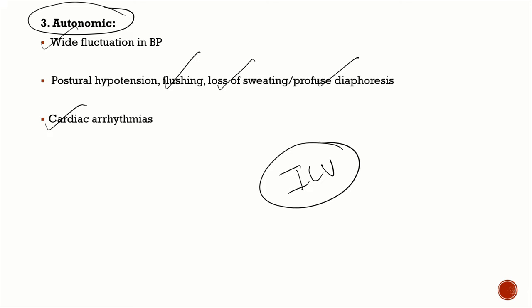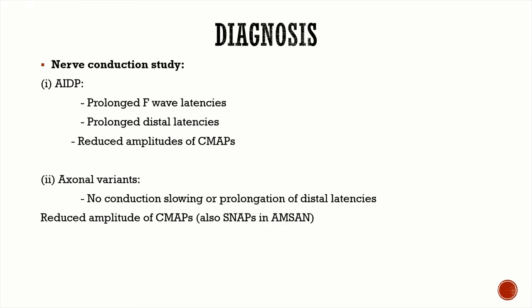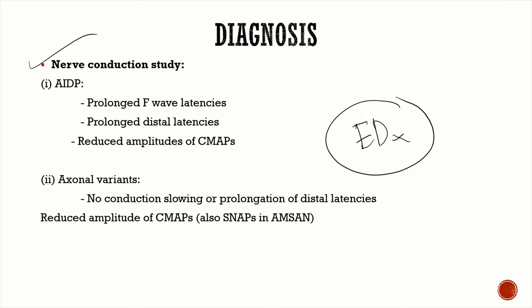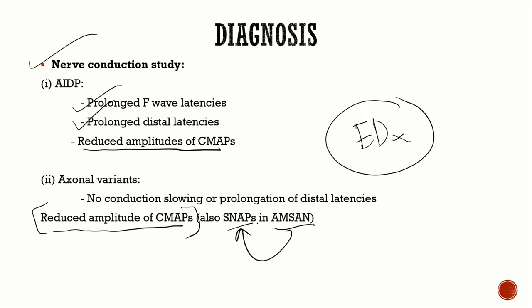GBS is diagnosed based on classical clinical presentation and electrophysiological studies. In AIDP (demyelinating type), nerve conduction study shows prolonged F-wave latencies, prolonged distal latencies, and reduced amplitude of compound muscle action potentials. In axonal variants, there is no conduction slowing, but predominantly reduced amplitude of CMAPs. In AMSAN, reduced sensory nerve action potentials (SNAPs) are also seen.